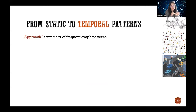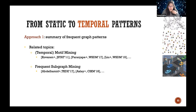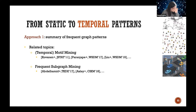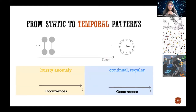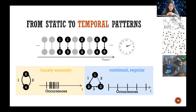In the last part of this section, we go from static patterns to temporal patterns. A lot of graphs evolve over time, so we may want to summarize time-evolving graphs. One approach is to summarize frequent graph patterns — there's rich literature on temporal motif mining, frequent subgraph mining, and graphlets. However, these methods typically focus on frequency and ignore how patterns evolve over time. Some patterns may be bursty while others may continually and regularly appear with smaller frequency, like stealthy computer network attacks or commute routes.